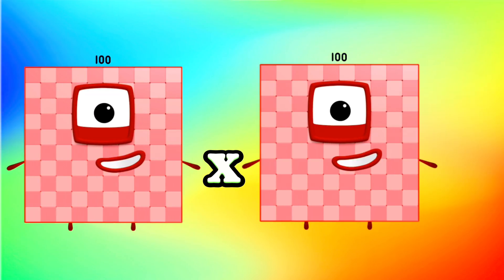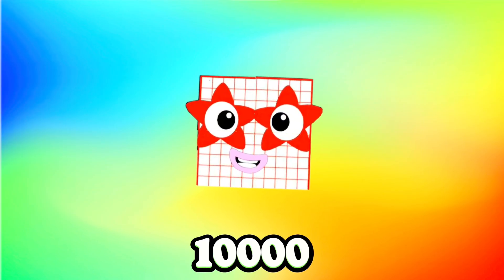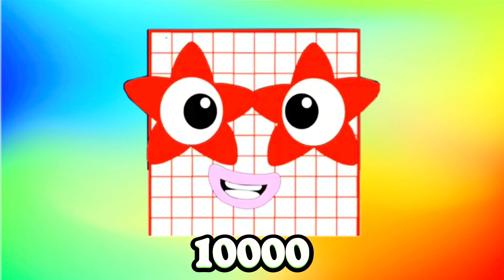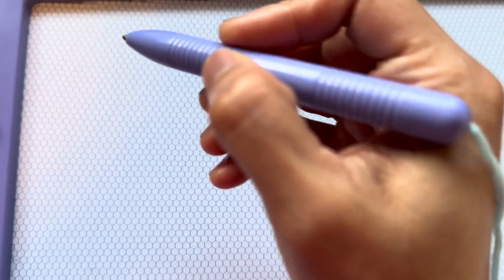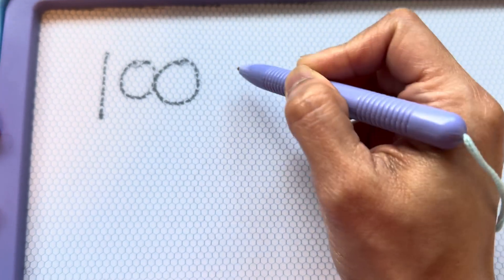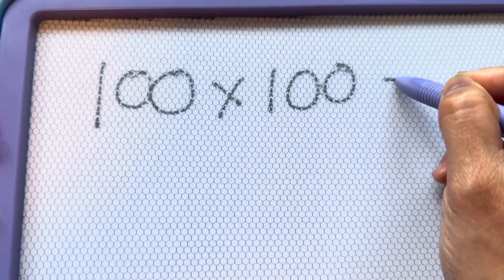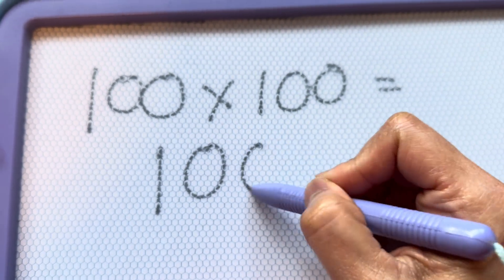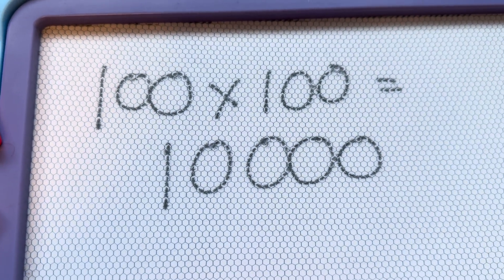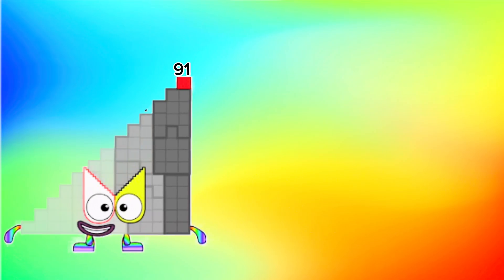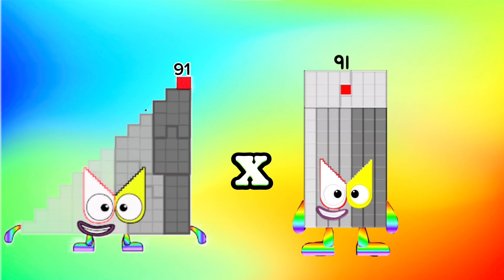100 multiplied by 100 is equals to 10,000. 100 multiplied by 100 is equals to 10,000. 91 multiplied by 91 is equals to...